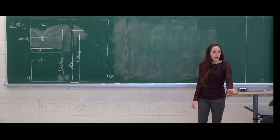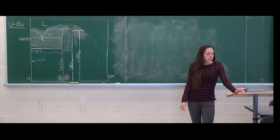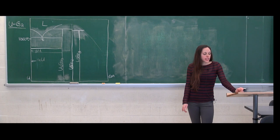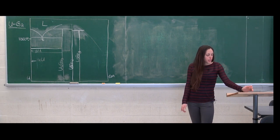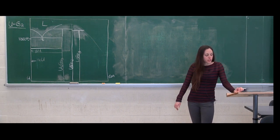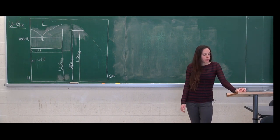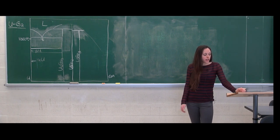So the question states: using the uranium-gallium phase diagram below, answer the following questions. Part A: circle and name all of the invariant reactions occurring on this phase diagram.